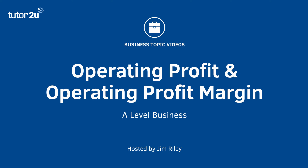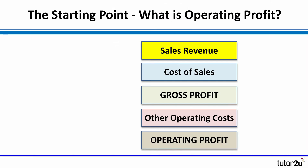Hi there. Let's take a look at another key measure of profit and a profitability ratio. This time we're looking at the operating profit number and the associated operating profit margin.